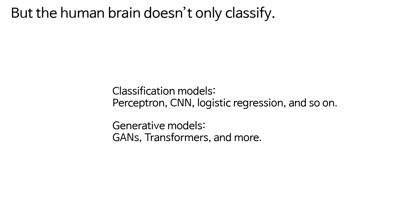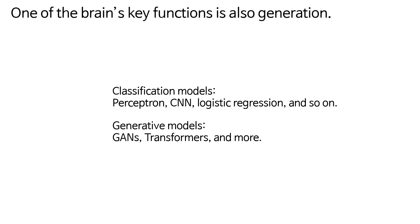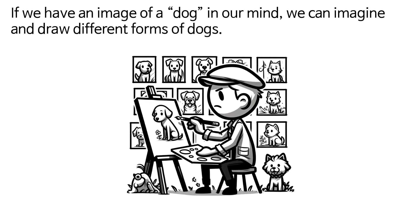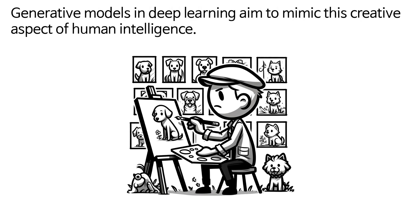But the human brain doesn't only classify. One of the brain's key functions is also generation. If we have an image of a dog in our mind, we can imagine and draw different forms of dogs. Generative models in deep learning aim to mimic this creative aspect of human intelligence.